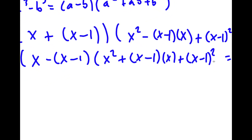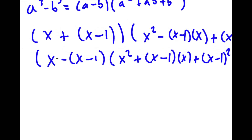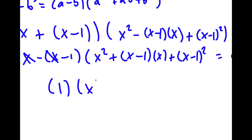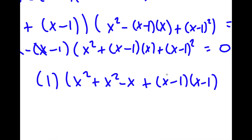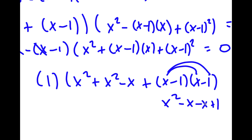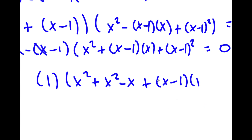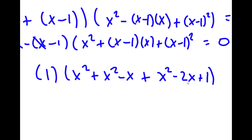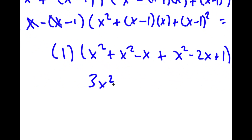Let's work with the second factor: x squared minus x times x minus 1 plus x minus 1 squared. Expanding x minus 1 squared gives x squared minus 2x plus 1. After simplification, we get 3x squared minus 3x plus 1 is equal to 0.